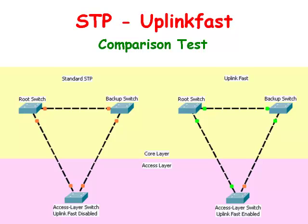It should be pointed out that Uplink Fast increases bridge priority values on all VLANs to 49,152, and increases all the port costs by 3000, in order to prevent the access layer switch from becoming the root bridge.